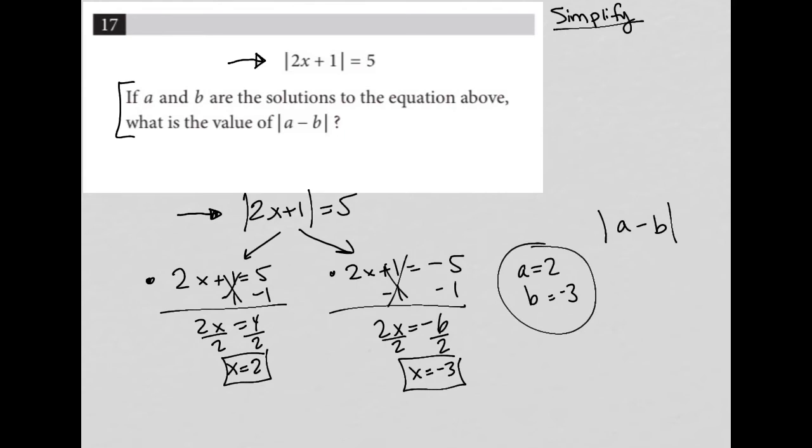Well, based upon the solutions that I got from simplifying the equation, my absolute value of A minus B would be the absolute value of 2 minus negative 3, which is 2 plus 3, which is equal to 5. So that would be my answer.